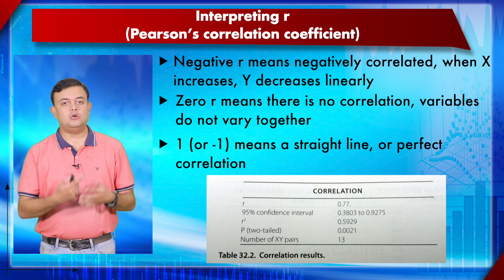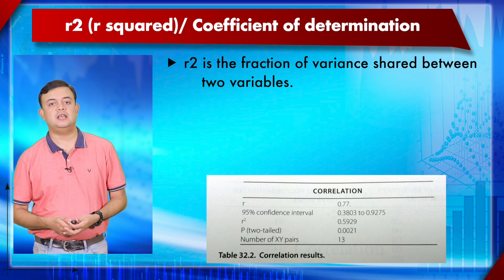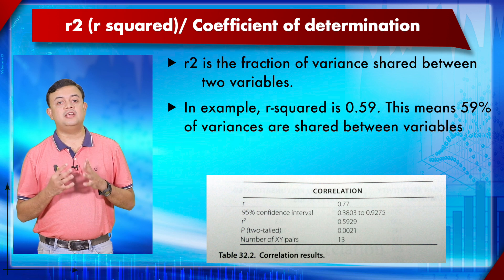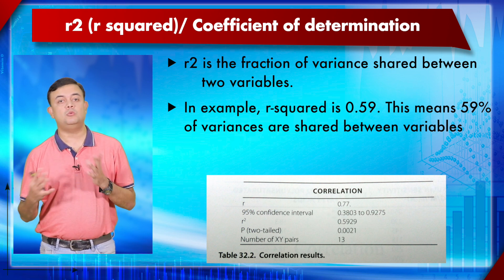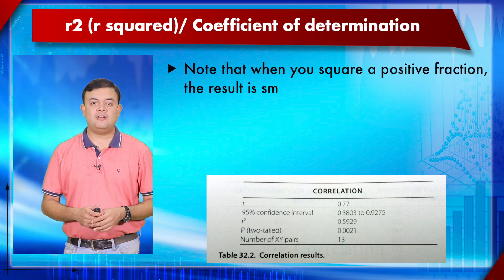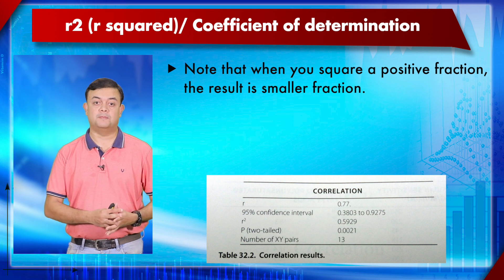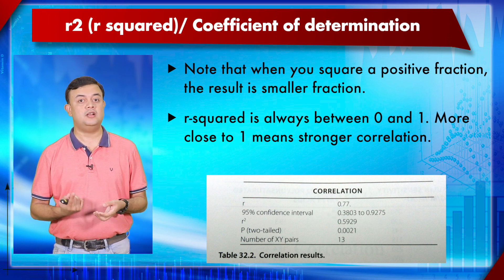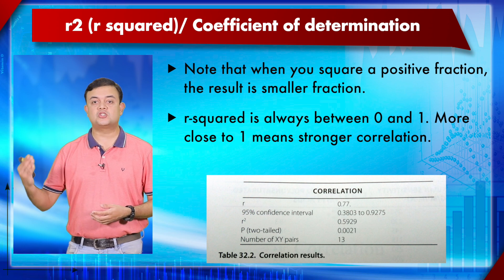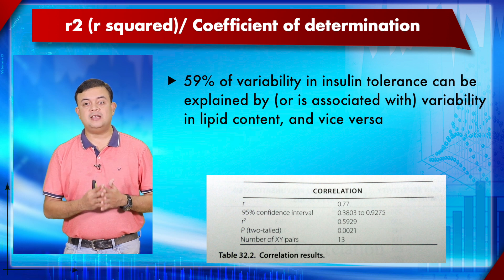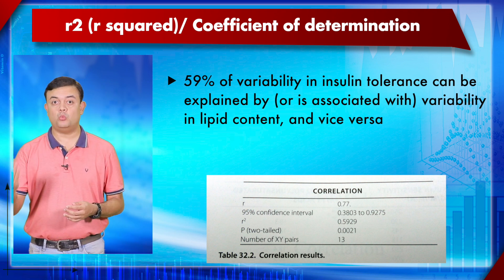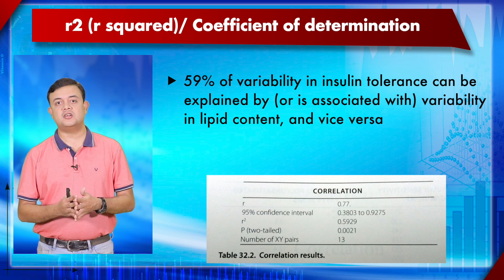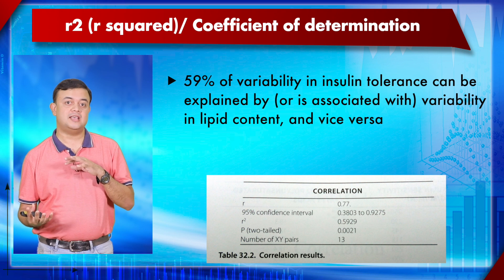r-squared, or the coefficient of determination, is the fraction of variance shared between the two variables. In our example, r² = 0.59, meaning 59% of the variance is shared. Note that squaring a positive fraction yields a smaller fraction, so r² is always between 0 and 1. A value closer to 1 means stronger correlation. 59% of the variability in insulin tolerance is associated with variability in lipid content, and vice versa — correlation does not tell you which variable is driving the change.